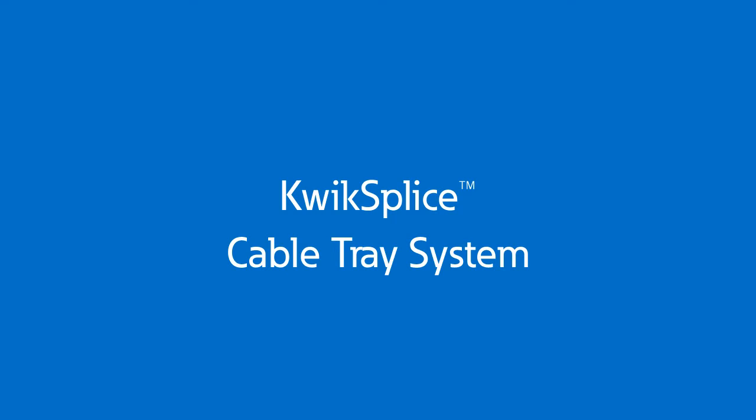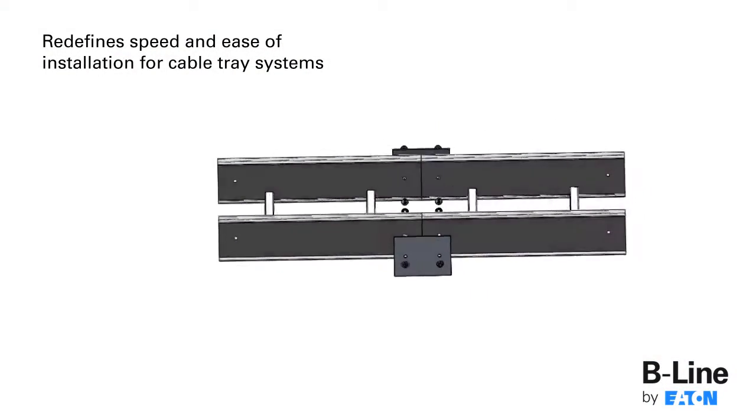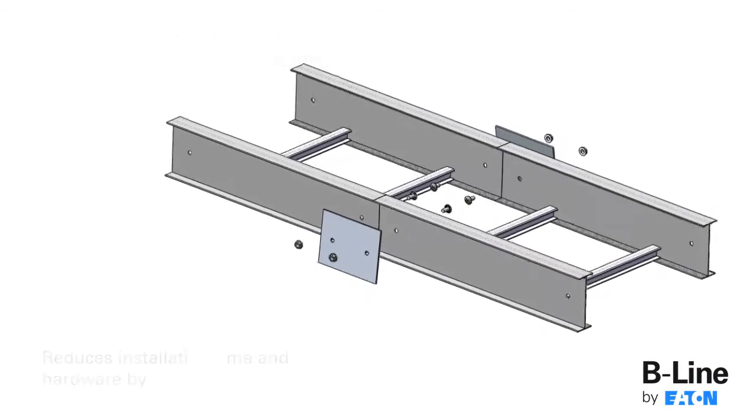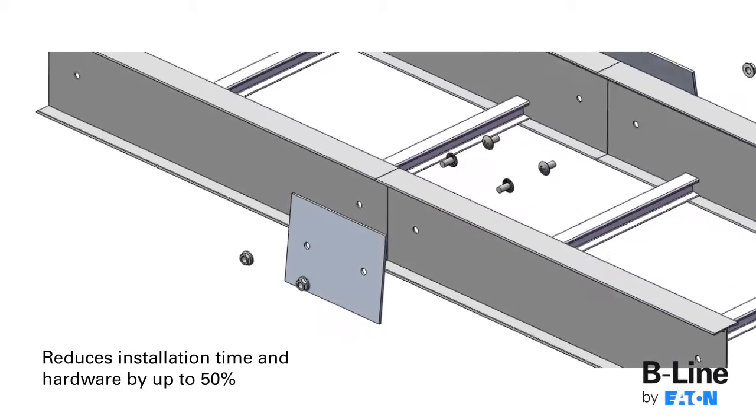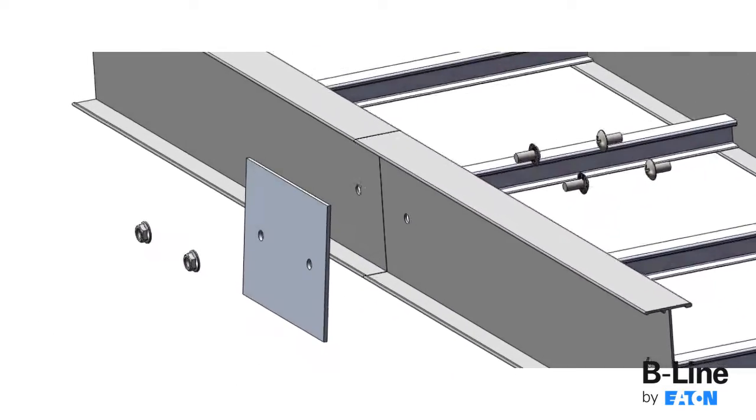The QuickSplice Aluminum Cable Tray System by Eaton's B-Line Business redefines speed and ease of installation for cable tray systems by reducing installation time and splicing hardware by up to 50%. Designed for NEMA 12A and 12B cable management applications.